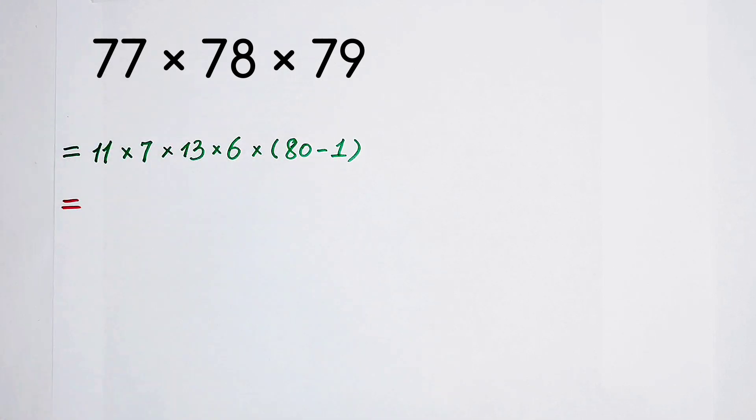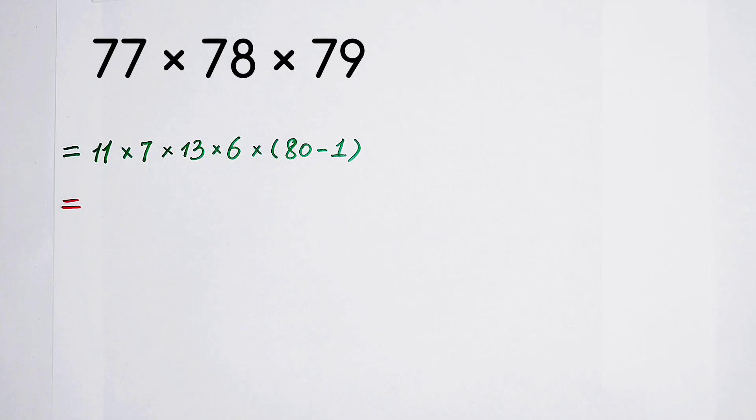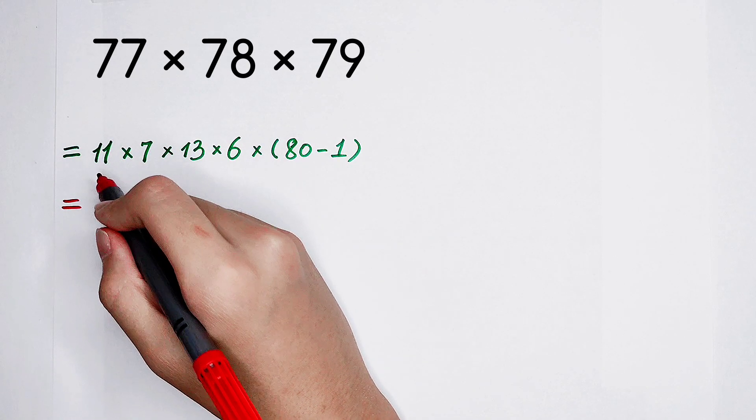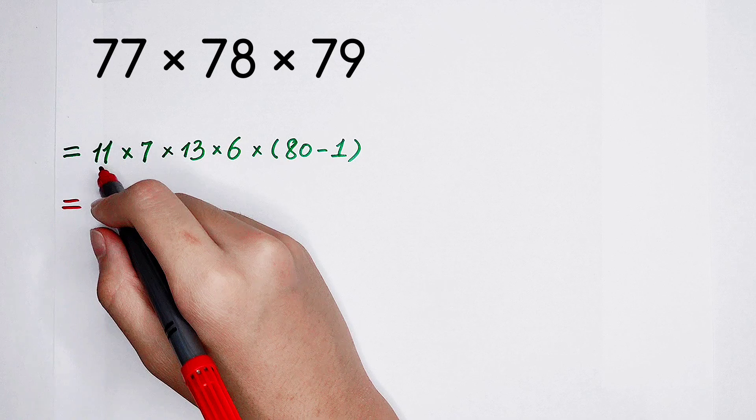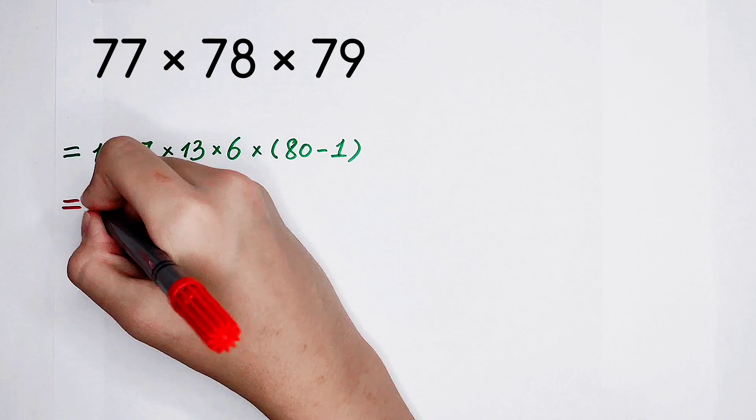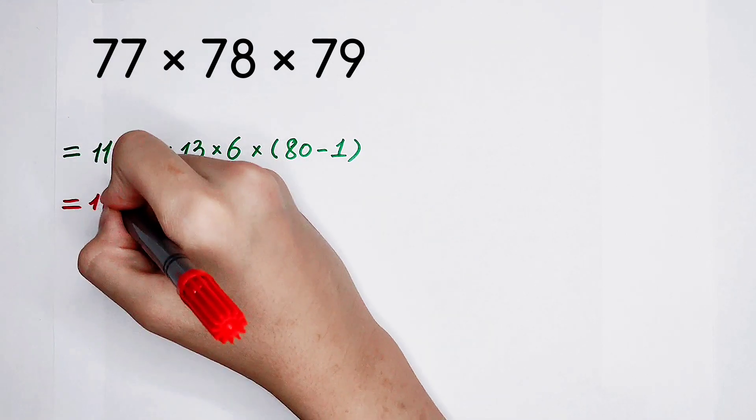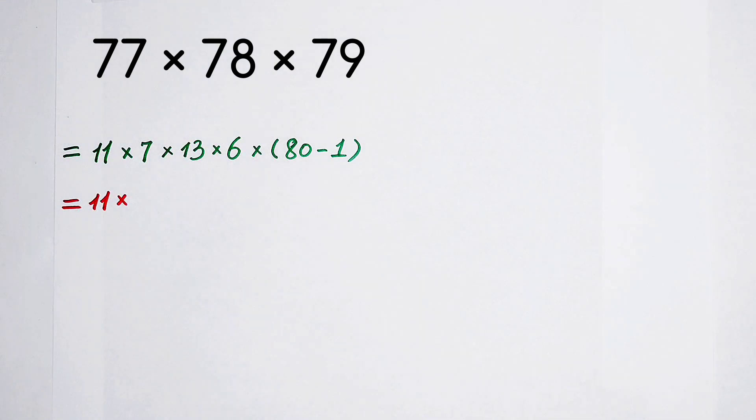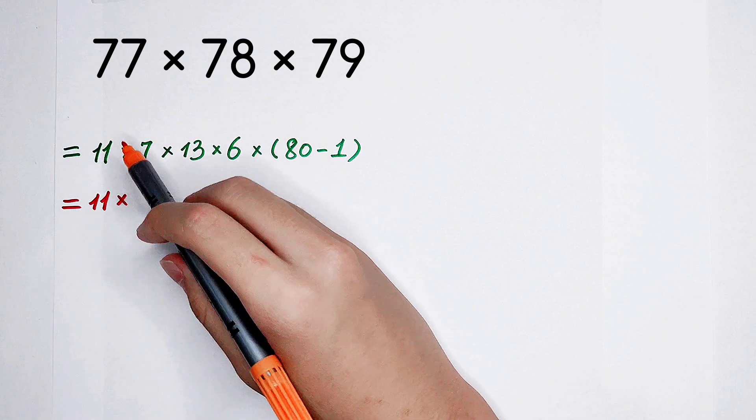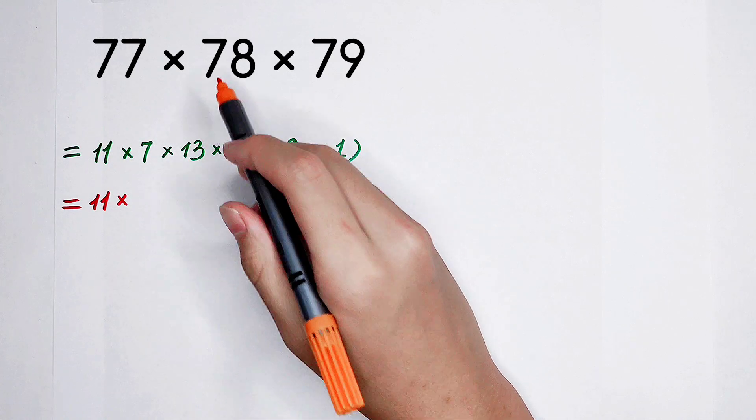Our second step is, do some changes. Okay, I think this 11 is very, very good, because it's a prime number. I'm just kidding, because it is very useful. 11 times. And now I separated these two numbers from 77, and I separated these two from 78.